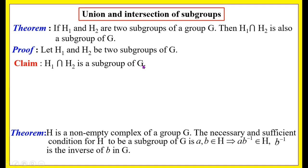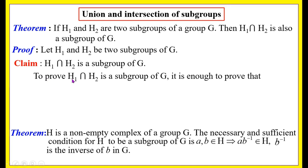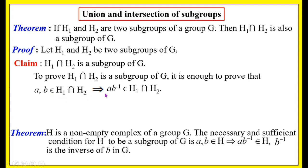It is enough to show that a, b belong to H1 ∩ H2 implies a·b⁻¹ belongs to H1 ∩ H2. That is, to prove H1 ∩ H2 is a subgroup of G, it is enough to prove that a, b belong to H1 ∩ H2 implies a·b⁻¹ belongs to H1 ∩ H2.